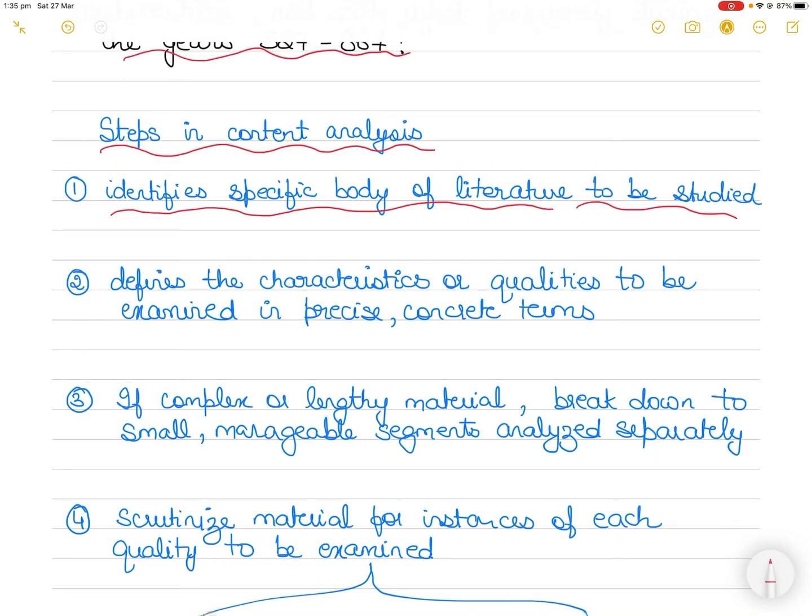If this body is relatively small, it is studied in its entirety. If it is quite large, for example if it consists of all newspaper articles written during a particular time period, a random sample is then selected.